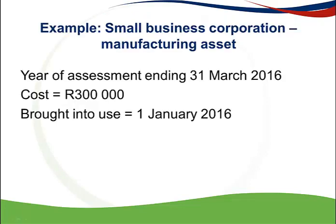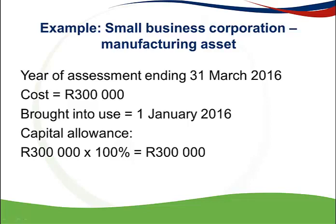Looking at an example: this is a small business corporation that acquired a manufacturing asset on 1 January 2016, bringing it into use on that date. The company's year of assessment ends 31 March 2016, and the cost of the asset is 300,000. Because this is a small business corporation manufacturing asset, I will claim 100% in the current year of assessment. So 300,000 times 100% equals a 300,000 deduction — the full cost is claimed in the year it is brought into use.